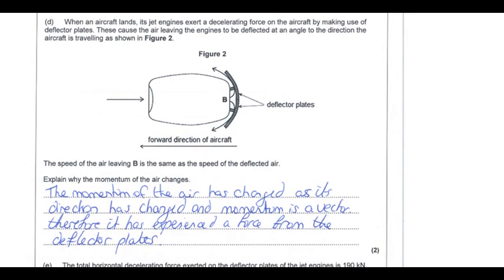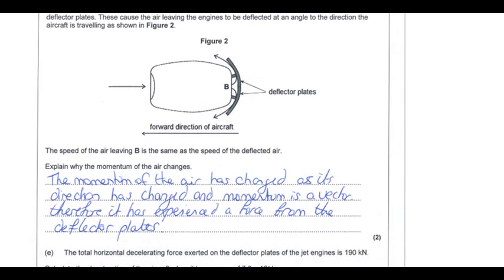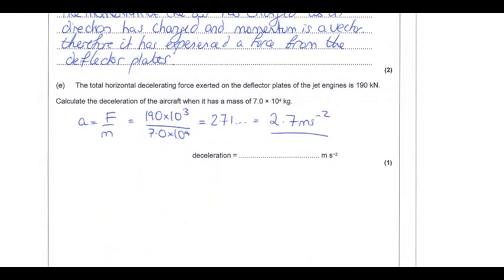During landing, deflector plates are added. Air comes in, hits the plates, and is redirected. The speed of the air leaving equals the speed entering — speed is unchanged but direction changes. Therefore the momentum of the air changes because momentum is a vector quantity; a change in direction means a change in momentum even when speed is constant.